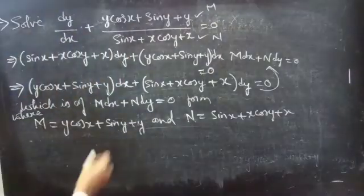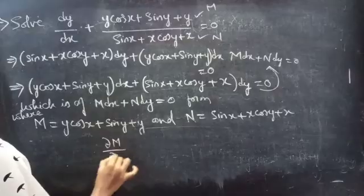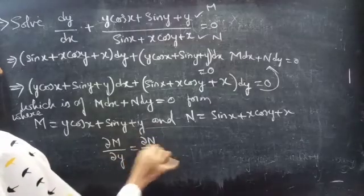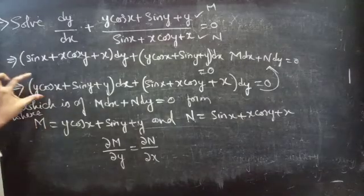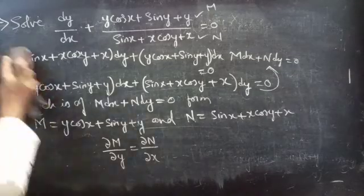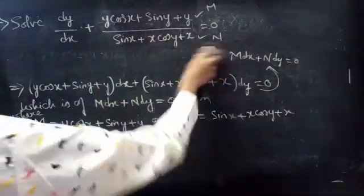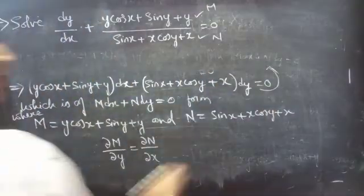If the partial derivative of M with respect to y equals the partial derivative of N with respect to x, then we can say that the reduced differential equation is an exact equation. Consider the reduced one as equation 2.